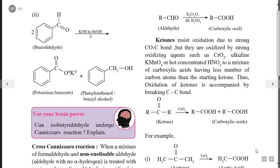An example of Clemmensen reduction: acetone (dimethyl ketone, CH3–C(=O)–CH3) when treated with Zn(Hg) and concentrated HCl, the C=O group is converted into CH2, giving propane (a three-carbon alkane) as the product, plus H2O as a side product.